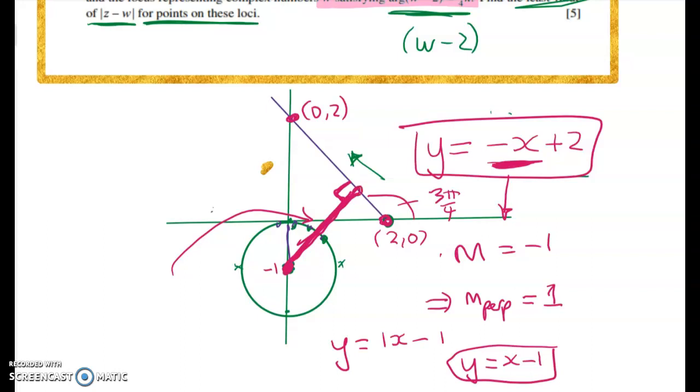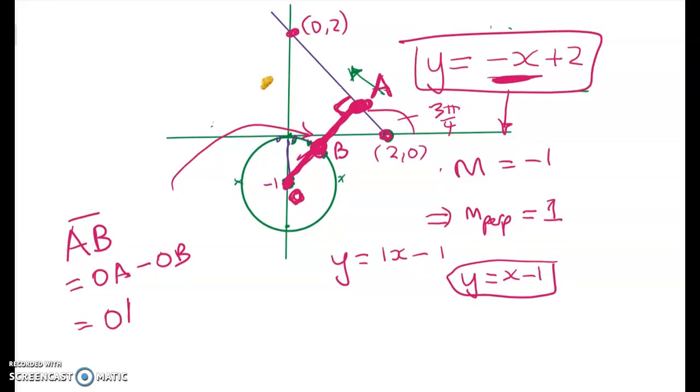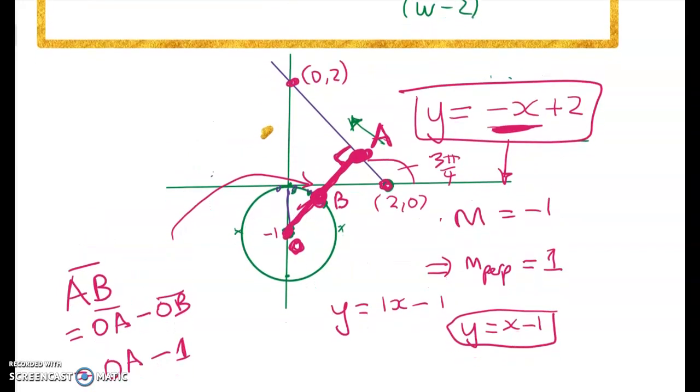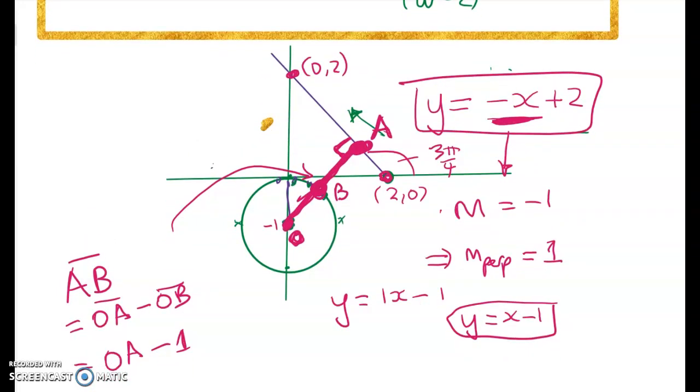So what we're going to find now are the coordinates for this point here and I'm going to call this point A and I'm going to call this point zero—I'm going to call this point O and I'm going to call this point here which we don't need to find explicitly as point B. And so the minimum distance that I'm looking for is AB. And AB is going to equal OA - OB which is going to equal OA - 1. Okay, so all I've got to do now is find the coordinates for point A and then we'll do a tiny bit of Pythagoras.